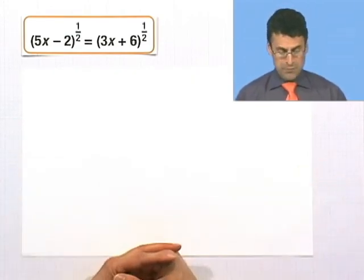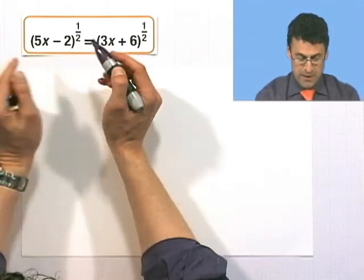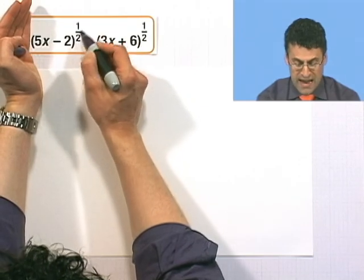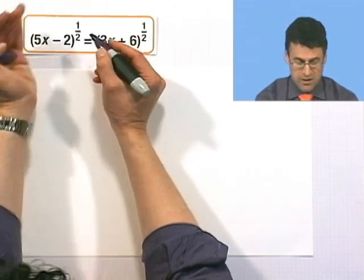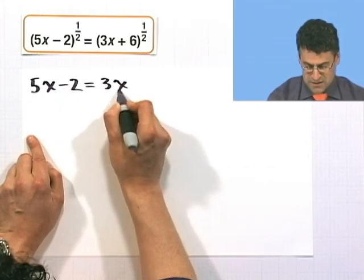I don't like those rational exponents, so I want to get rid of them legally. If I have something raised to the 1/2 power — which means square root — I can undo the square root by squaring. But if I square one side, I'm forced to square the other side to keep the equation fair and balanced. When I square the left-hand side, it lifts that radical. If I take something to the 1/2 power and square it, the 2 and the 1/2 multiply and I see a power of 1. So squaring both sides gives me 5x minus 2 equals 3x plus 6.